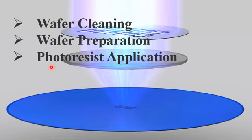Spinning time also has a direct correlation with the thickness of the photoresist. If the spinning time is more, you will get a thinner film. Similarly, if the spinning time is less, you will get a thicker film of photoresist on the surface.